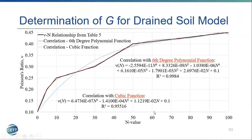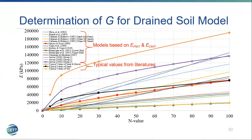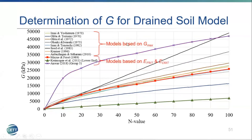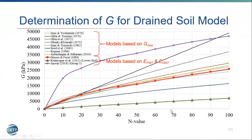The correlation between modulus of elasticity and N-value is shown with typical values from literature, including PMT modulus and DMT modulus. The PMT is considered a good application for hydrofracture because the failure mechanism seems quite similar. Another approach using Gmax from geophysical surveys with assumed shear strain showed reasonable agreement with the modulus of elasticity approach. Different correlations were selected for different soil types: sand and gravel, sand and silts, silty sand, and fine sands.